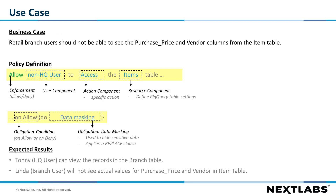Let's consider the following scenario. Branch users should not be able to access or see the original values for the purchase price and vendor columns in the item table. In order to meet this requirement, we need to create a policy that would allow non-HQ users to access the items table. On top of this basic policy definition, we're also going to use Data Masking Obligation.